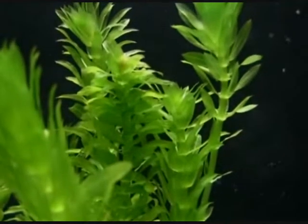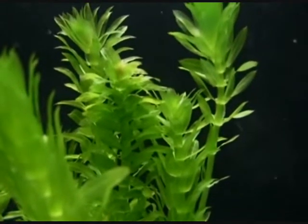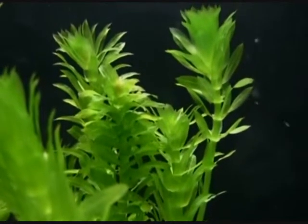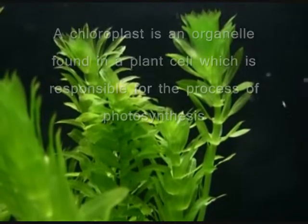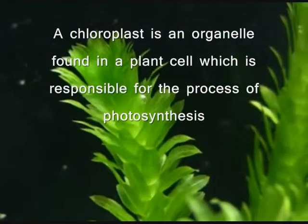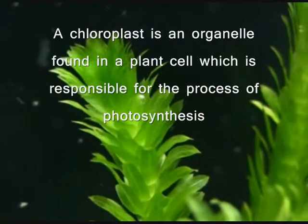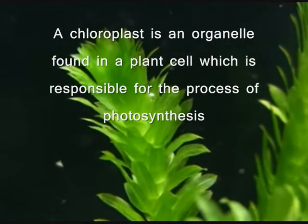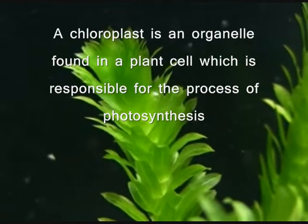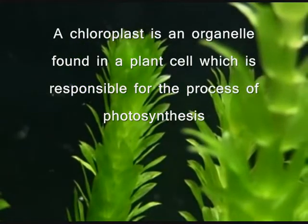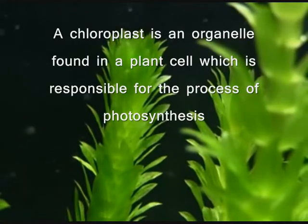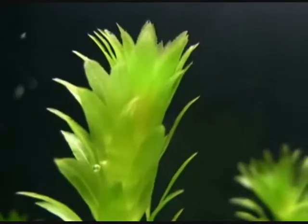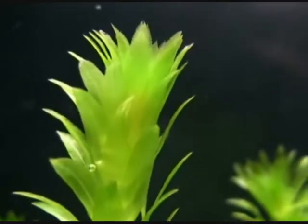First of all, what are chloroplasts? Chloroplasts are organelles that can only be found in a plant cell. Organelles are of course the special structures in the working area of every cell. Chloroplasts are the organelles that produce food through the process of photosynthesis. Animal cells do not require photosynthesis as they rely on ready-made food.